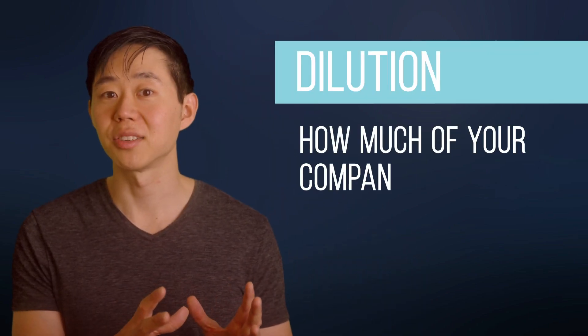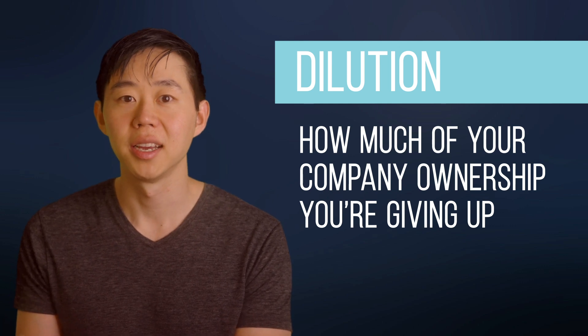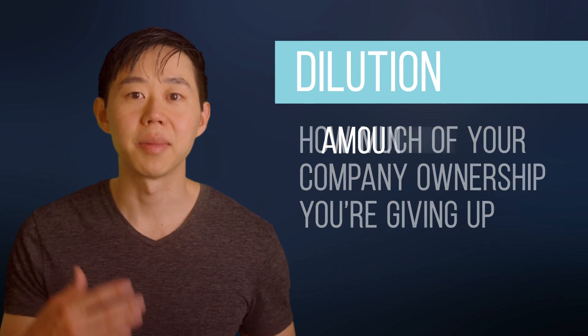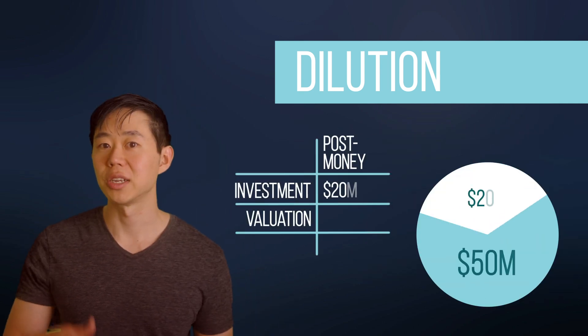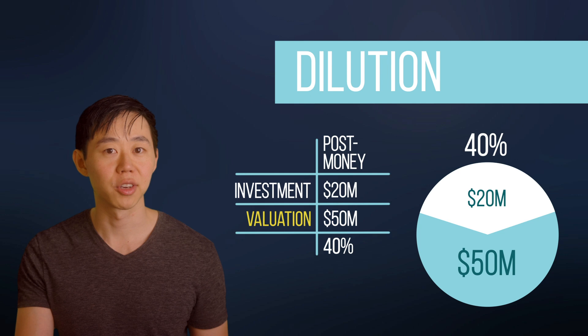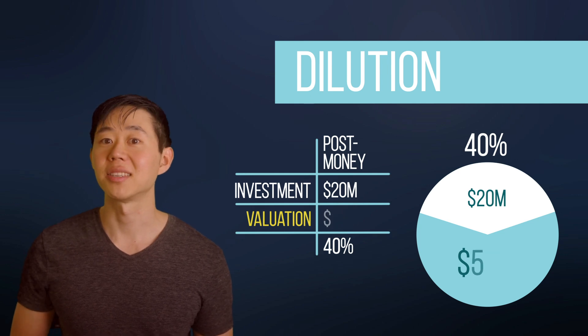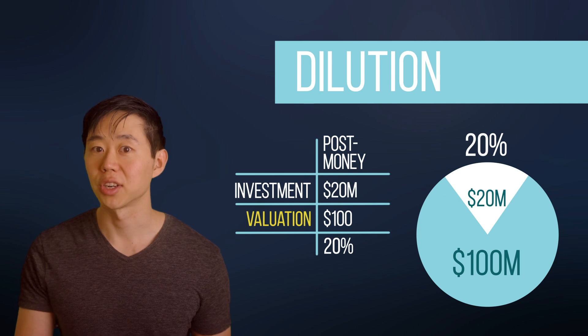Valuation matters because it directly affects likely the most important thing you care about as a founder: how much of your company you're giving up to investors, called dilution. Dilution you're taking as a founder is equivalent to the ownership you're giving up, and it's equal to the amount you raise divided by the post-money valuation. So if you raise $20 million at a post-money valuation of $50 million, you're giving up 40% of your company. If you raise that same $20 million at a $100 million post-money valuation, you're only giving up 20%.